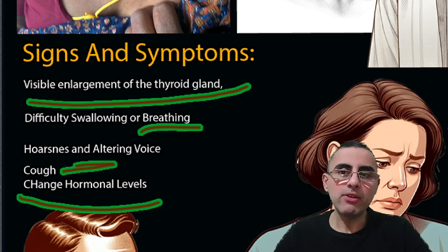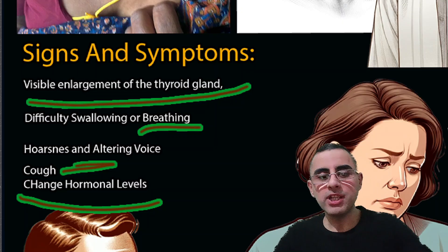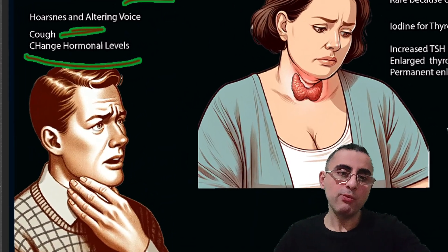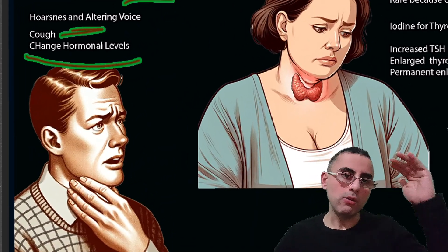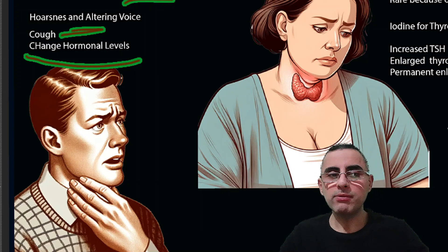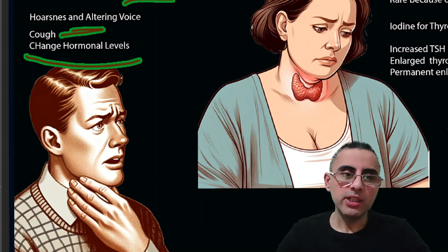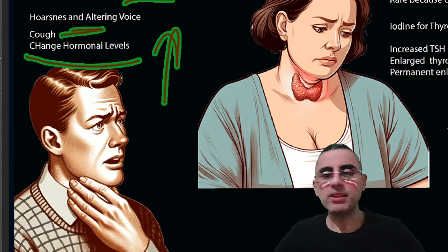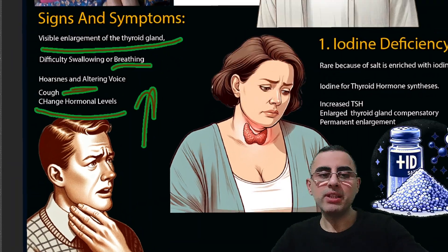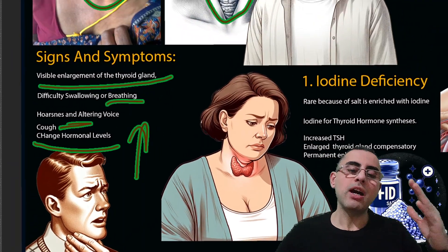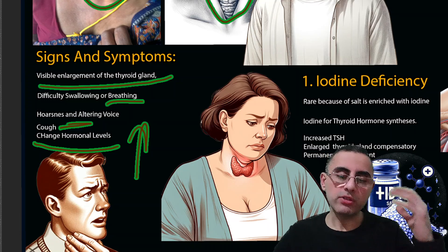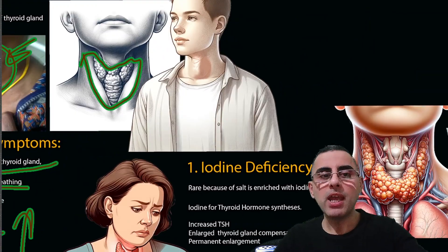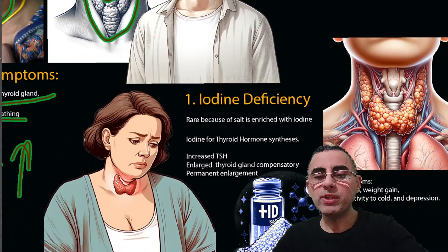Changes in hormonal levels are also important — changes in thyroid stimulating hormone and thyroid hormones. We can have weight gain if there is a low thyroid hormone level, and weight loss if there is increased thyroid activity. So symptoms differ depending on whether thyroid hormones are low or high — both are possible — and usually we have abnormal hormonal levels.